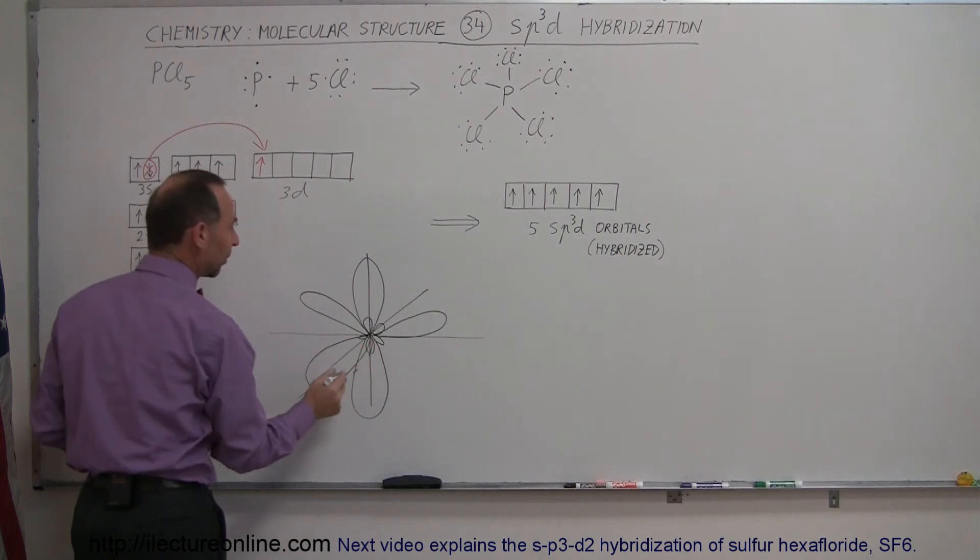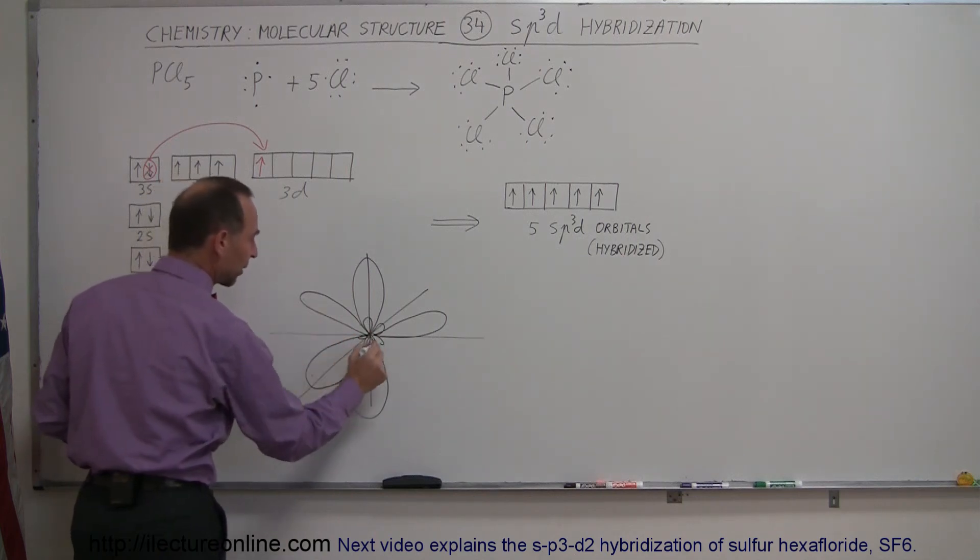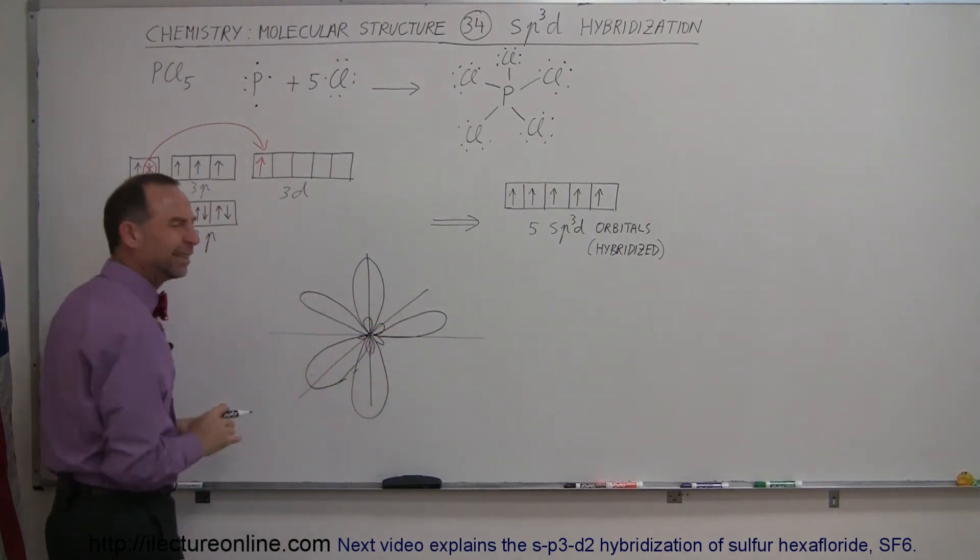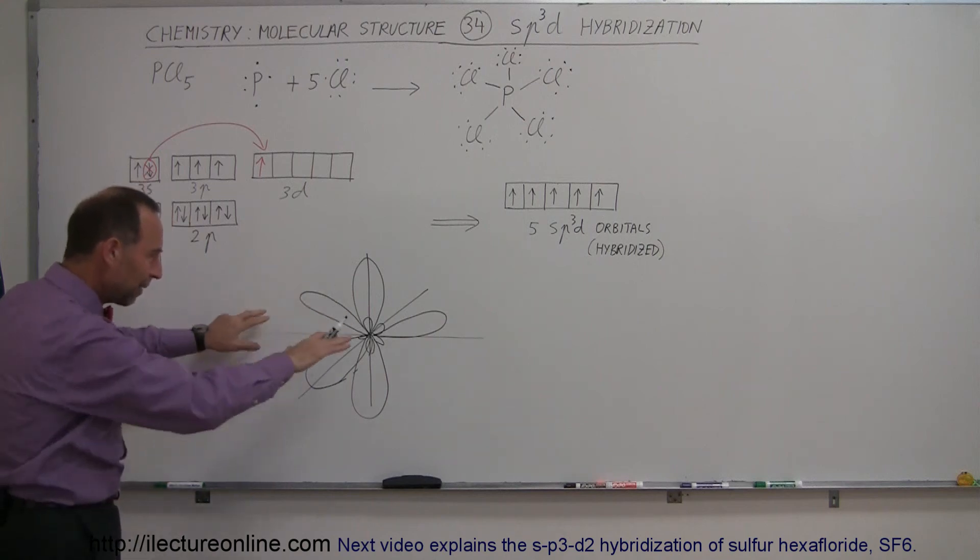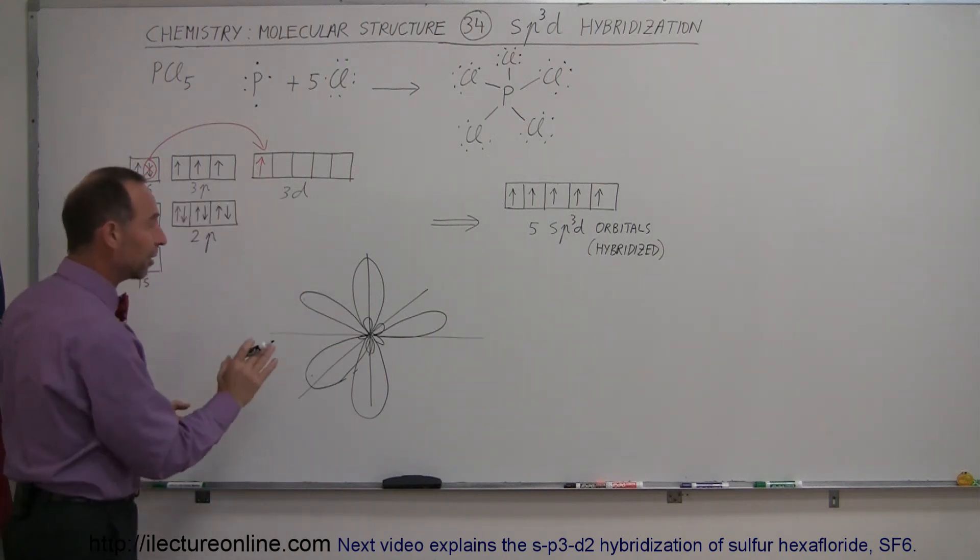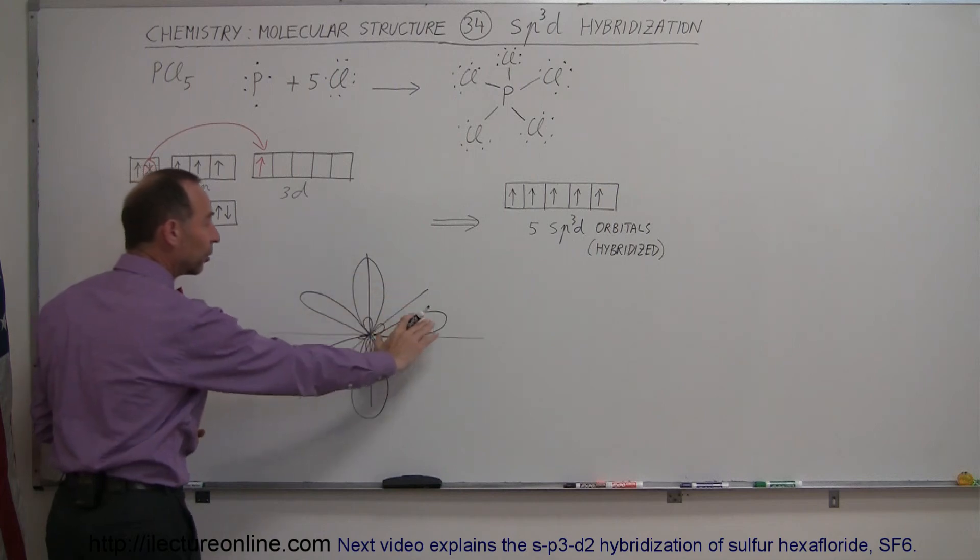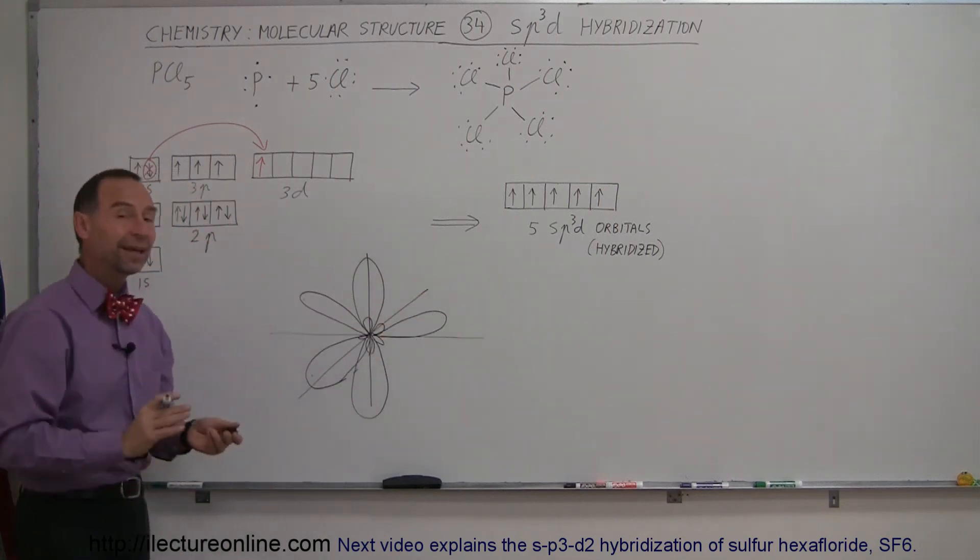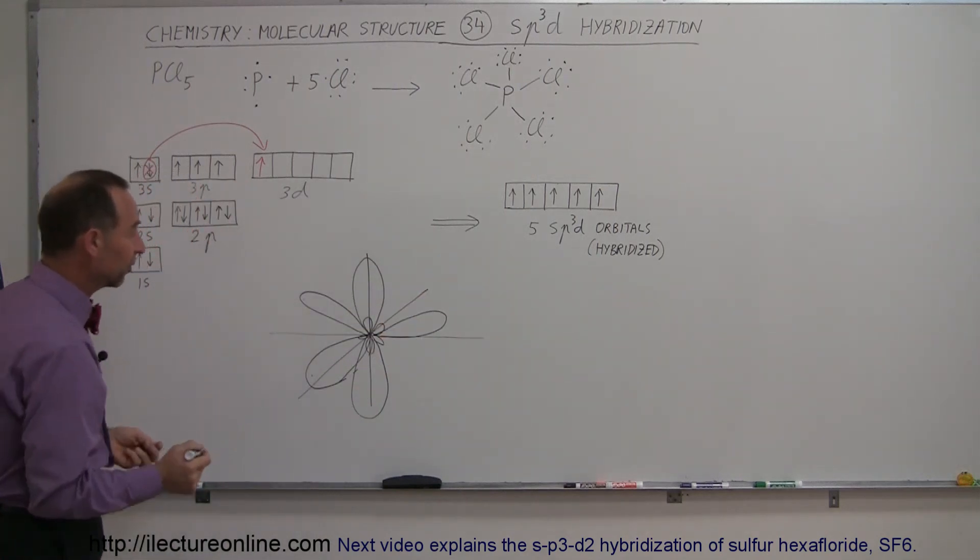Notice that these three right here all reside on the same plane. Didn't do a very good job drawing that, but imagine those three to be in a plane and those two sticking out like that. So now you see that you have five identical lobes representing regions in which electrons can exist.